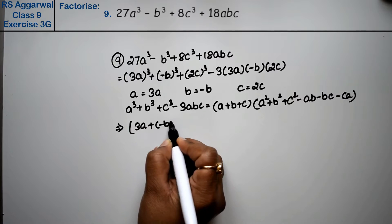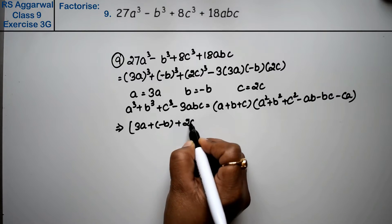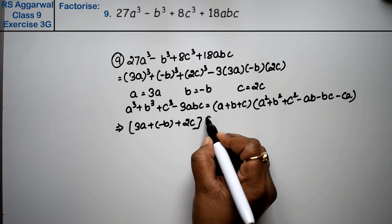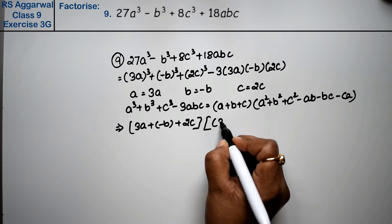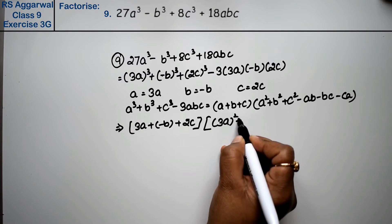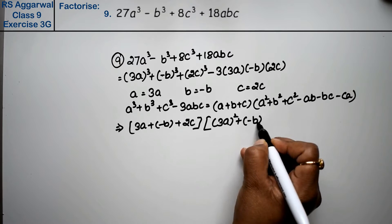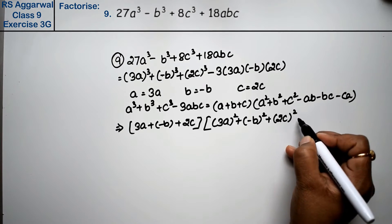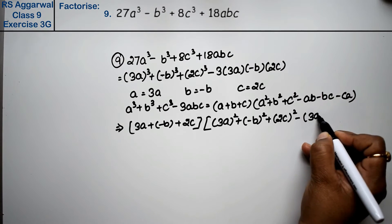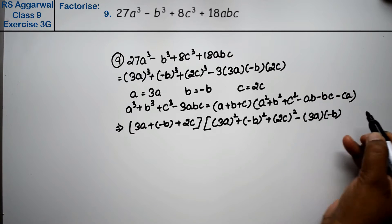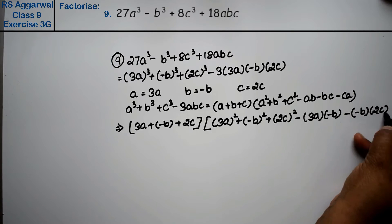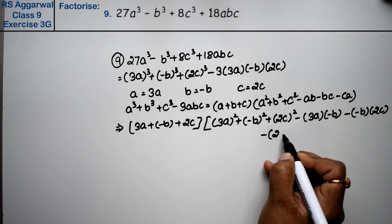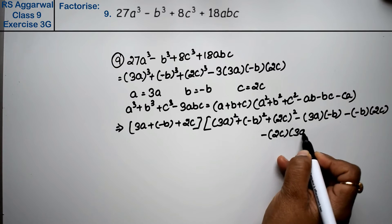Substituting the values: 9a² plus b² plus 4c² minus 3a into minus b, minus minus b into 2c, and minus 2c into 3a.